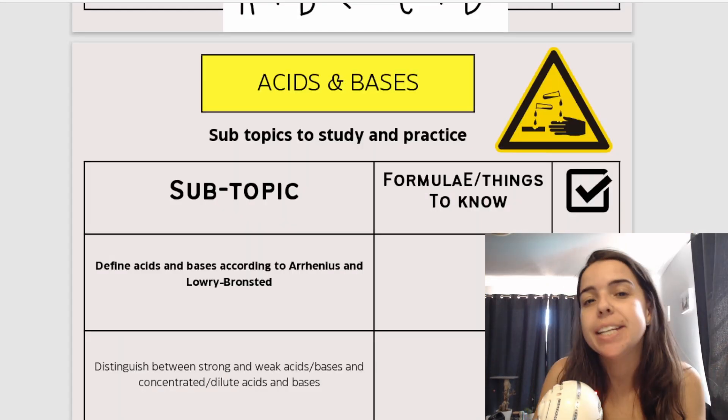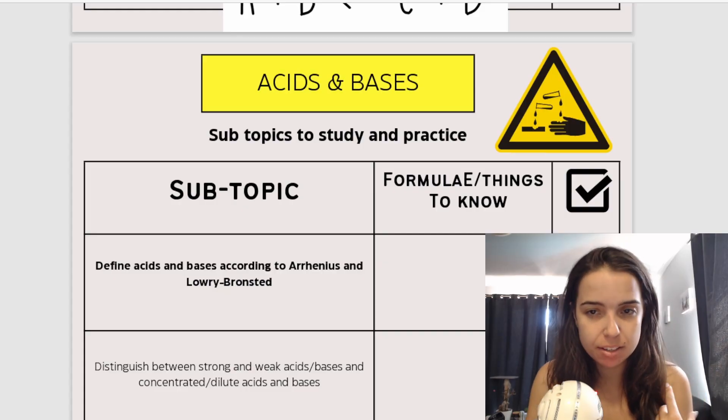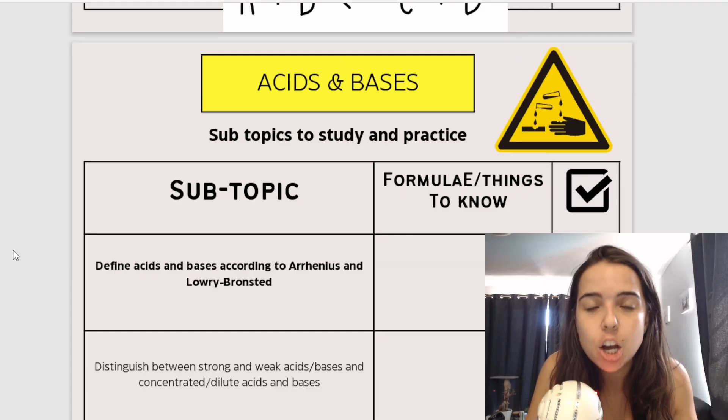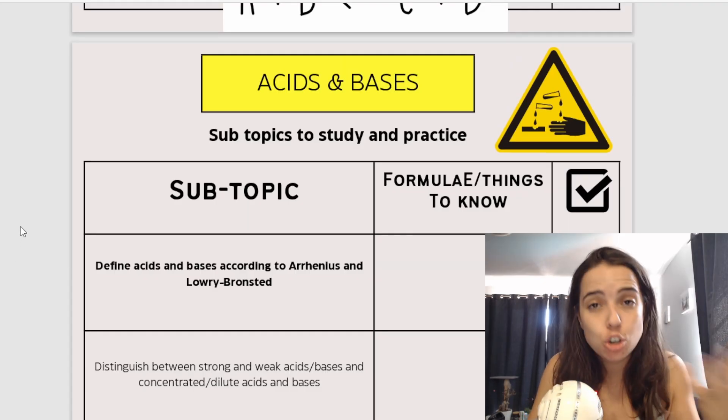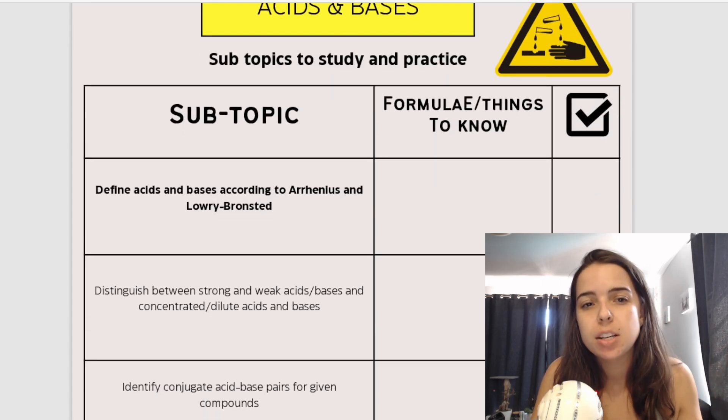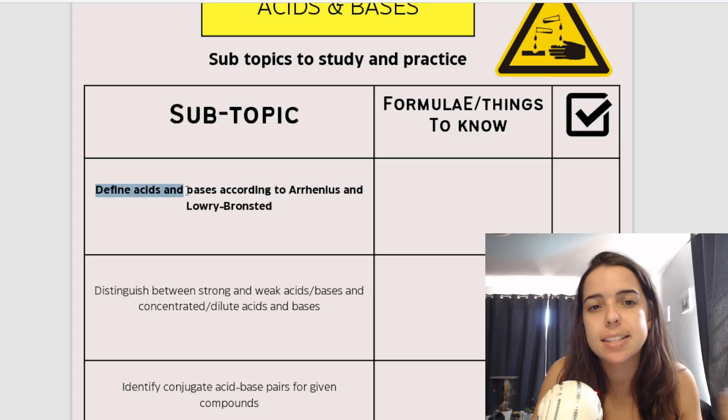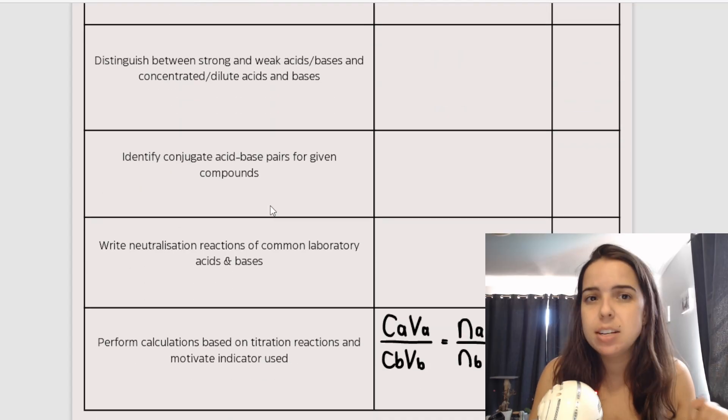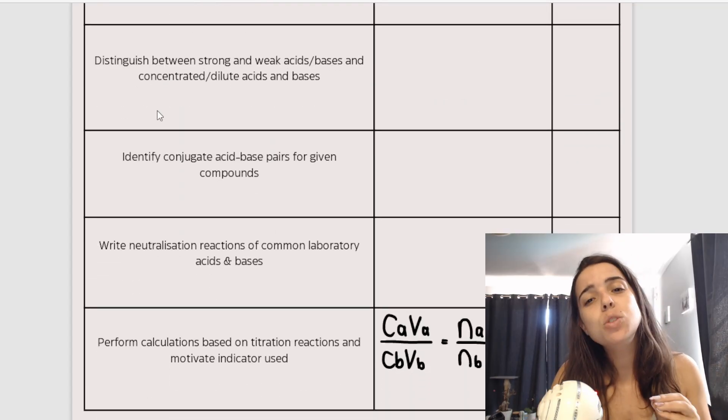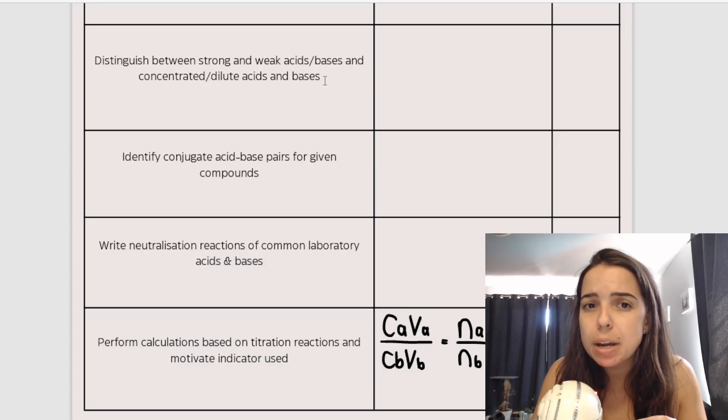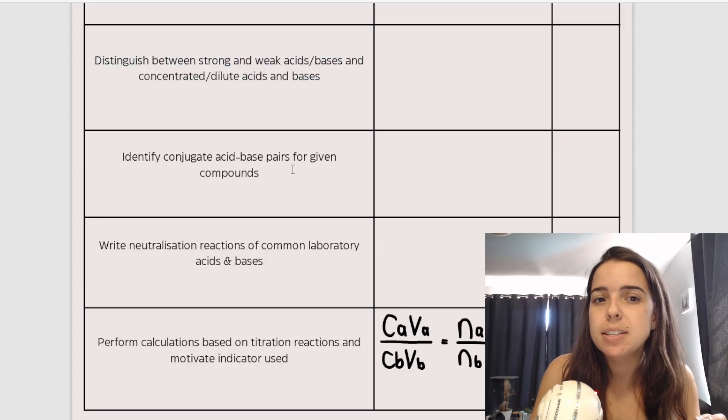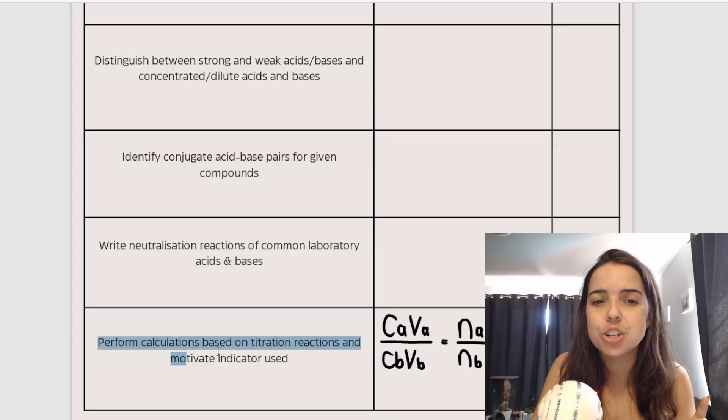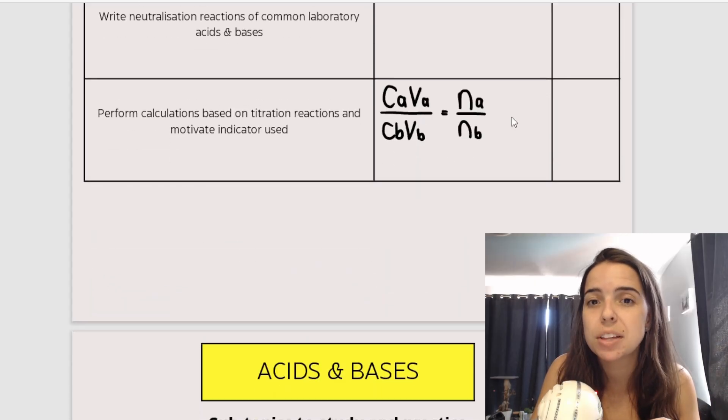And then last but definitely not least, we have another chemistry topic called acids and bases. Now, this is a topic that has come up in grade 11 chemistry already. You should have already learned a lot of the acid and bases topic from in grade 11. We built upon that. So a lot of the things listed in this document, like define acids and bases according to the Arrhenius and Lowry-Bronsted theories, you should have done that in grade 11. Distinguish between strong and weak acids or bases and concentrated or dilute acids or bases, you should have done that. Conjugate acid base pairs, you should have done that. Most of these things should have been done already, including calculations based on titration reactions using this formula.